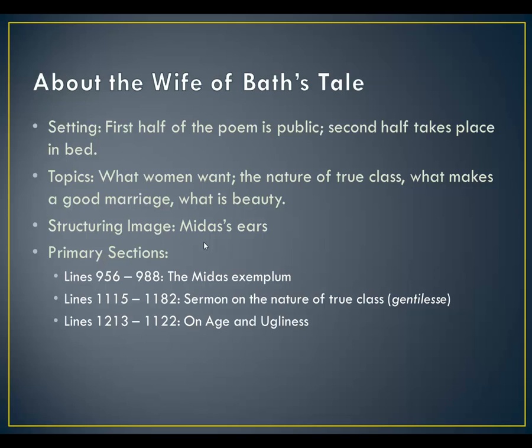There's a structuring image in here that I'd like you to look up: Midas's ears. When you see that image, make sure you look it up and see what it means. The primary sections are lines 956 through 988 — that's Midas's exemplum — lines 1115 to 1182, which is the sermon on the nature of true class, and lines 1213 to 1122, which is all about age and ugliness.